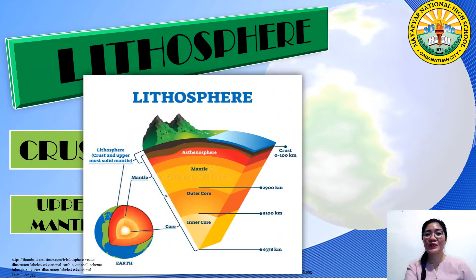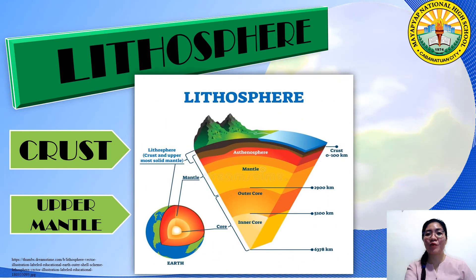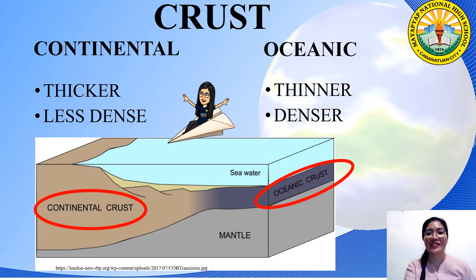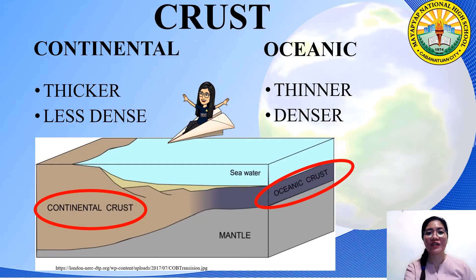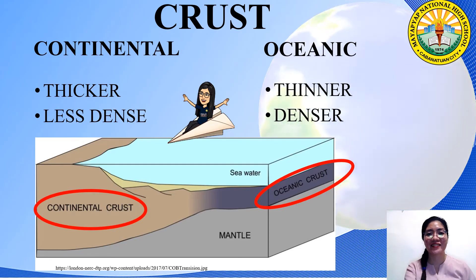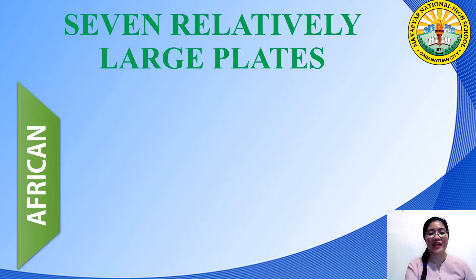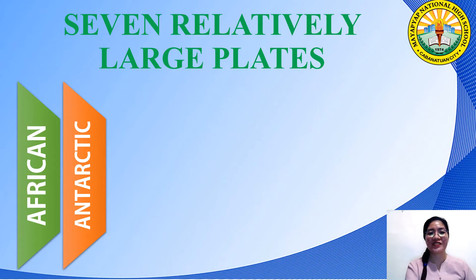The lithosphere consists of crust and the upper portion of the mantle. The continental crust is thicker but less dense than the oceanic crust. Because of the difference in density, continental crust floats higher than the oceanic crust.